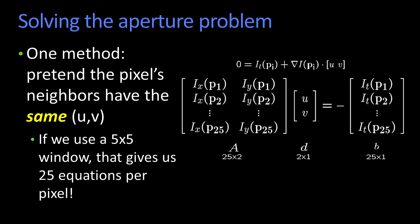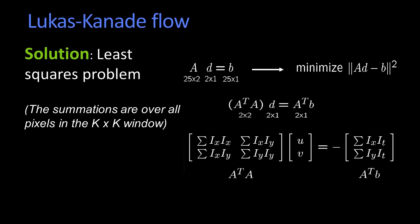And the basic idea was to pretend that all the pixels were moving in the same direction in a little local neighborhood. So we would sum up over that window. We said a five by five window, you'd have 25 equations per pixel. And that basically gave us this least squares solution.